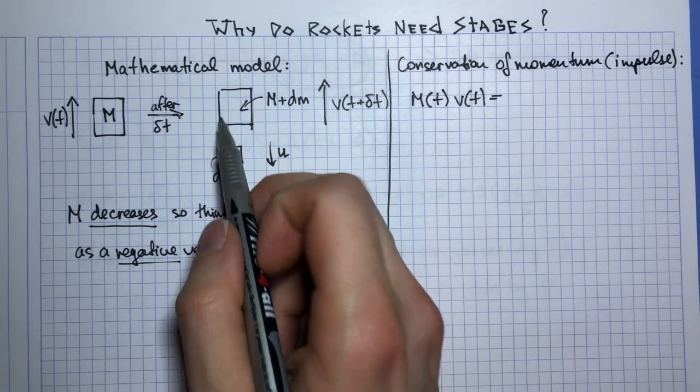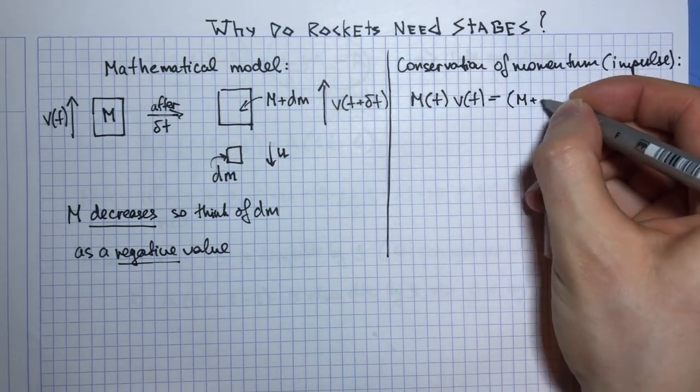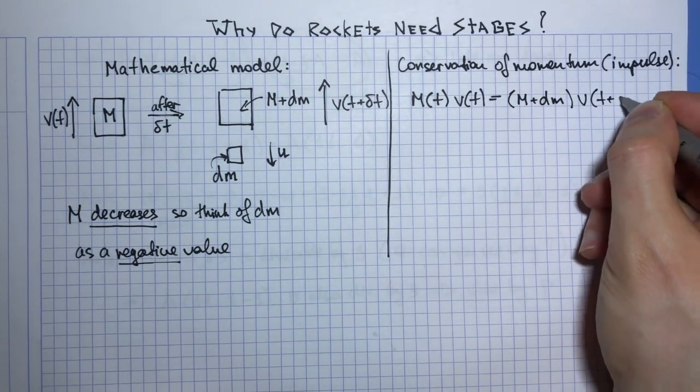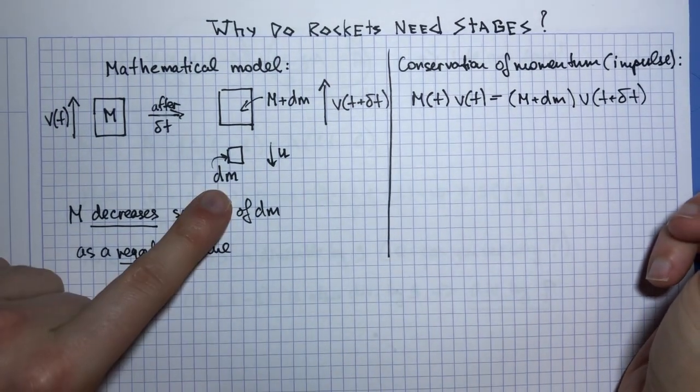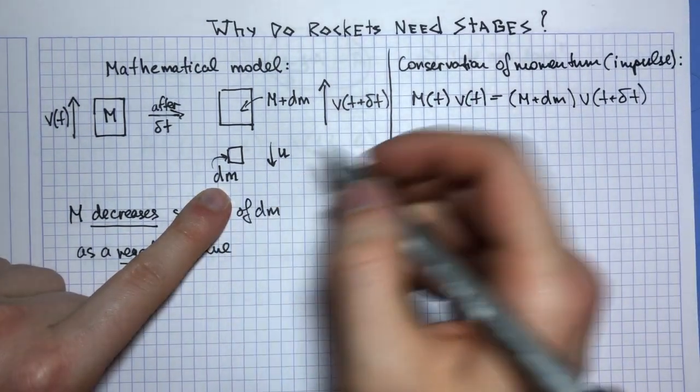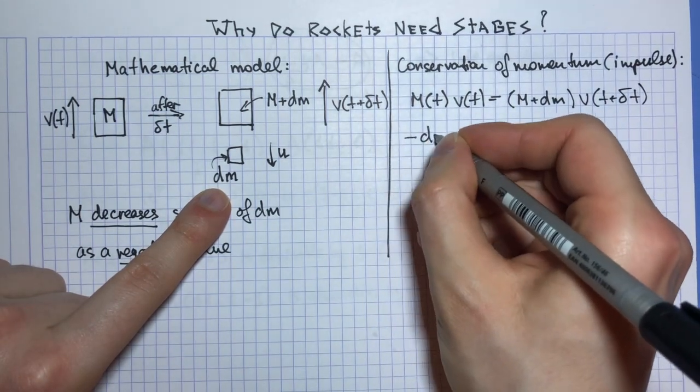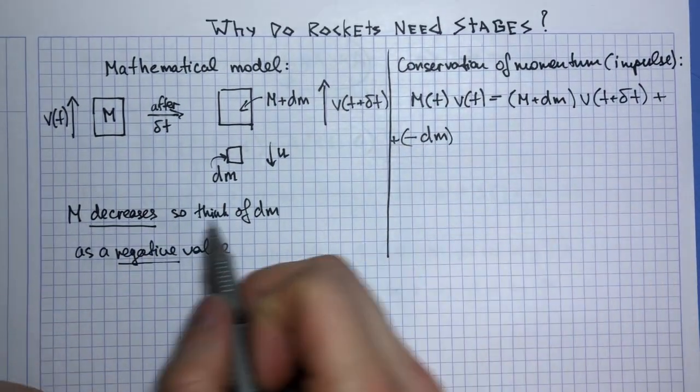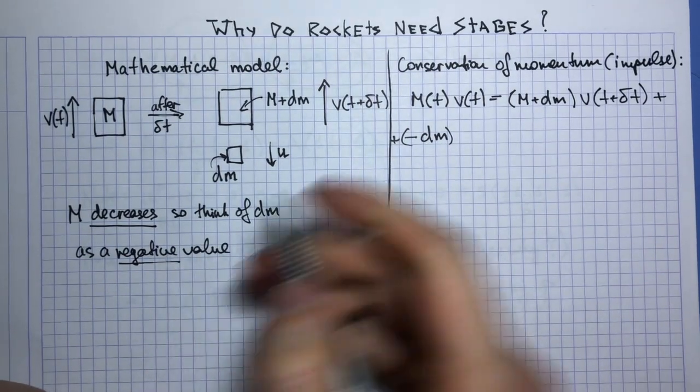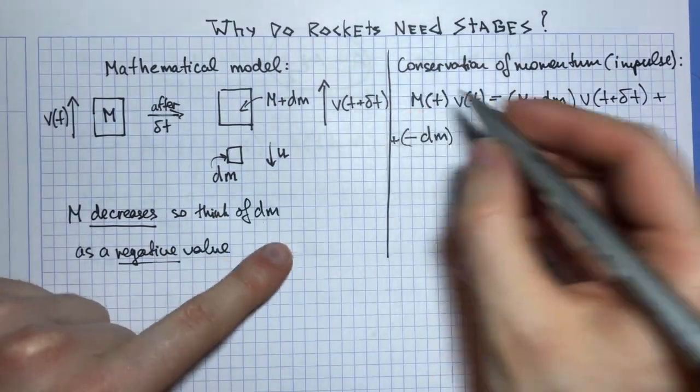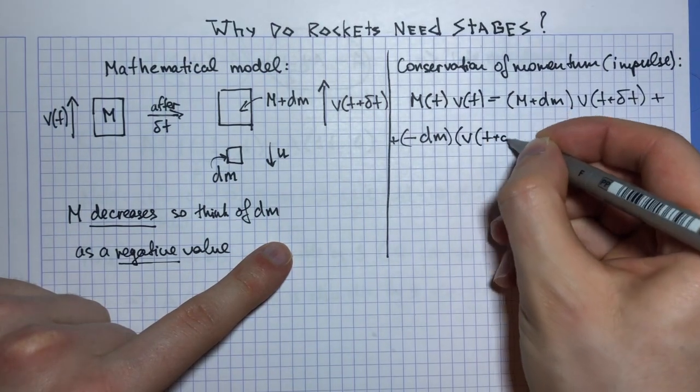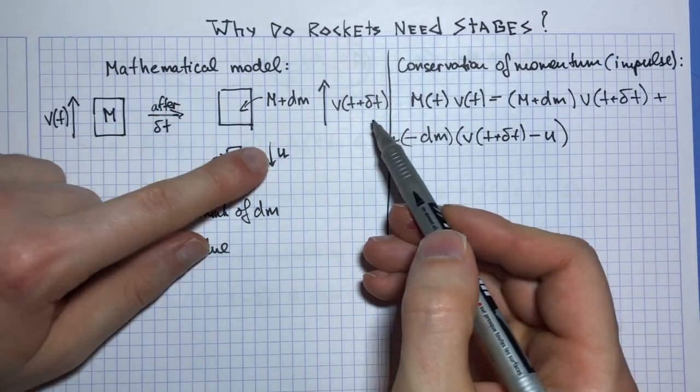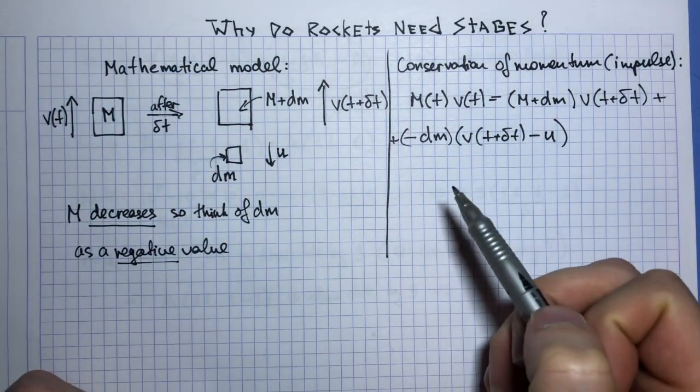And after delta t, one of my bodies has mass M plus delta m times its speed v(t + delta t), and then the mass of the second body is minus delta m times v(t + delta t) minus u. Because when fuel was inside my rocket it was traveling at this speed, but u is in the opposite direction. So this is what I get.